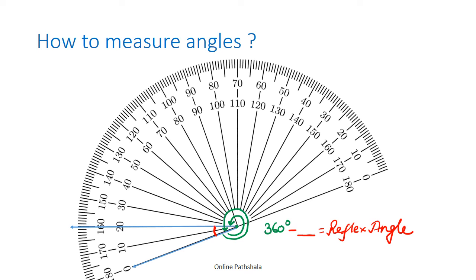I have already kept the center of the protractor on the vertex and aligned my base with one of the arms. Now if I see the internal angle, the second arm is lying at 20 degrees. So this gives us 20 degrees. 360 degrees minus 20 degrees gives us that our reflex angle is 340 degrees.